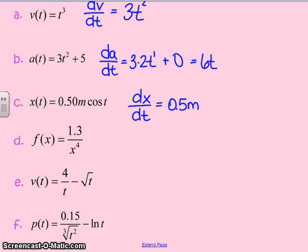If I look at my sheet, the derivative of cosine of t is negative sine. So 0.5 meters times negative sine of t. I'm going to put my negative out front here. And so the derivative of that function is negative 0.5 meters times the sine of t.